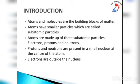Electrons have negative charge, protons have positive charge, whereas neutrons have no charge — they are neutral. Protons and neutrons are present in a small nucleus at the centre of the atom. Almost the entire mass of the atom is in the nucleus because the electrons outside the nucleus have very very small mass.